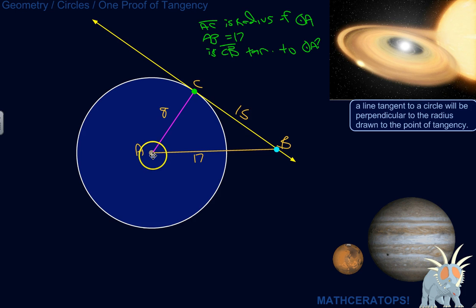So here's a radius of the circle, 8 units. If this is truly a tangent line, this should be perpendicular, meaning this forms a 90 degree angle.